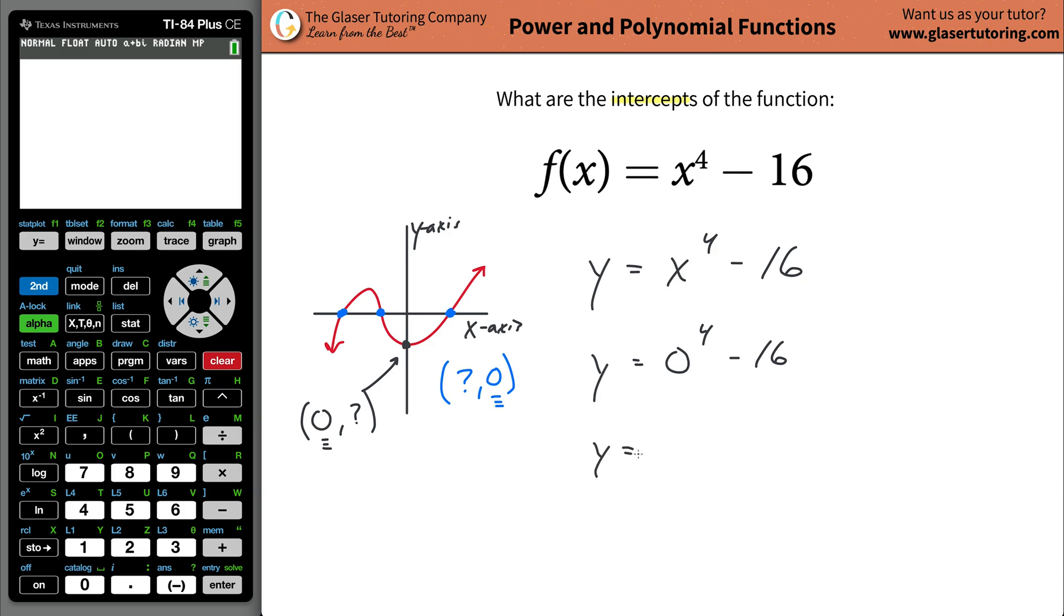You can calculate it. So, y will then be zero raised to the fourth is just zero minus 16. Obviously, then, y is just going to be equal to negative 16. And now, this is basically our y-intercept. In other words, the coordinates of the y-intercept will be zero comma negative 16. That is the y-intercept, ladies and gentlemen. And that's how easy it is.